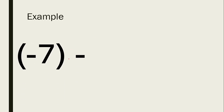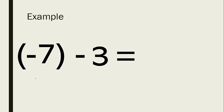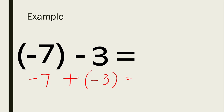Another example: negative 7 minus 3. Following the KCC rules: copy negative 7, change the subtraction sign to addition, and change positive 3 to its opposite, negative 3. As you can see, we are now adding the same signs. Adding their absolute values: 7 plus 3 is 10. Copy the same sign, which is negative. The answer is negative 10.